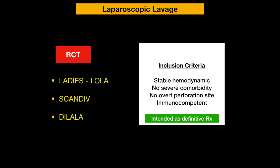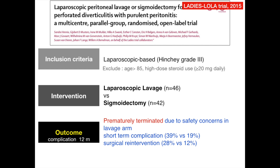Regarding laparoscopic lavage, there are three RCTs: the Ladies trial, LOLA, and the Scandivesia trial. All included immunocompetent, hemodynamically stable patients without severe comorbidity and without overt peritonitis. The Ladies trial is a multicenter trial comparing laparoscopic lavage versus sigmoidectomy in purulent peritonitis. Unfortunately, the trial was prematurely terminated due to safety concerns in the lavage arm, which had a higher complication rate and higher re-intervention rate — approximately twofold — compared to the sigmoidectomy arm, likely due to the unresected colon causing ongoing septic complications.